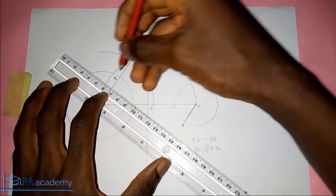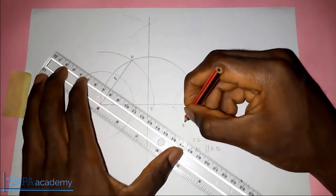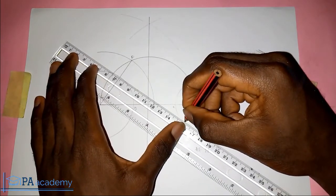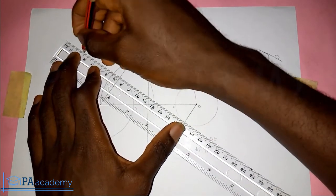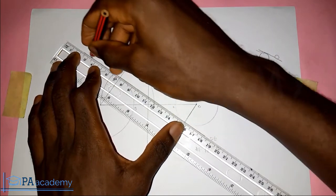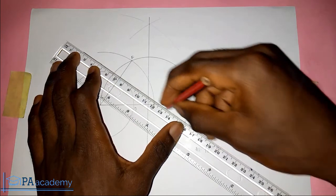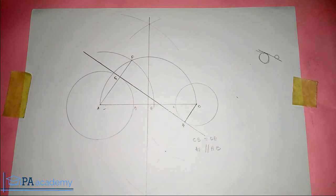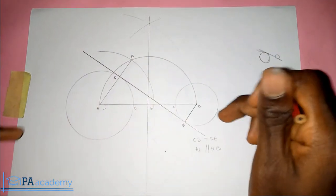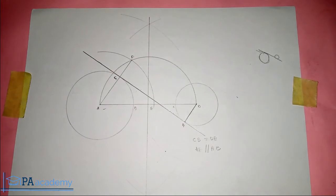So the next thing to do is, this point G and this point H — we join them together. Now this line that we are drawing is the tangent — the internal tangent to these two circles. And that is the main thing that we are looking for: the common internal tangent to two unequal circles.